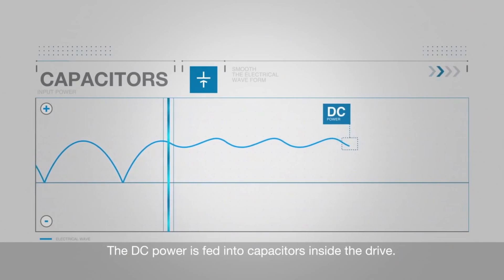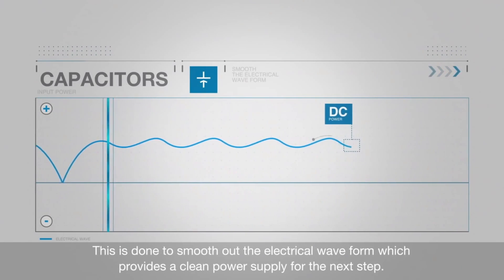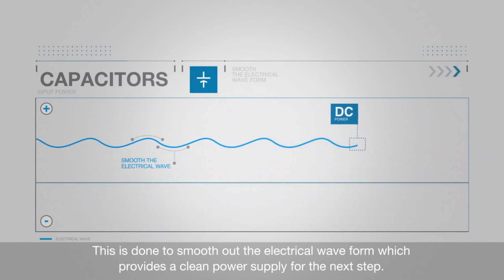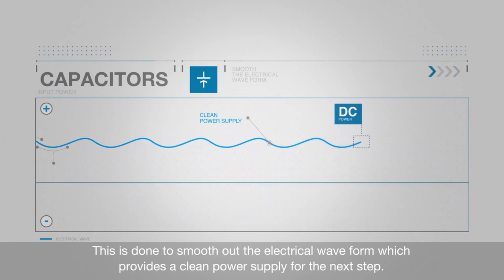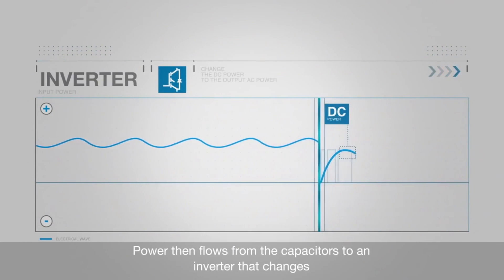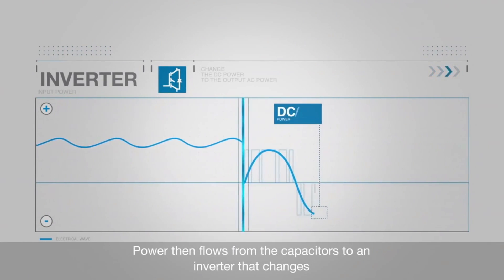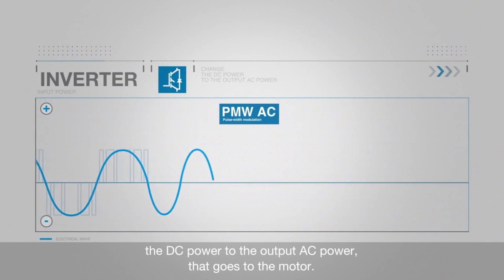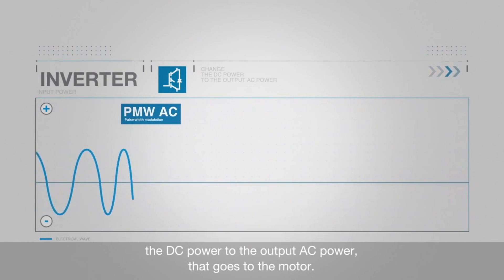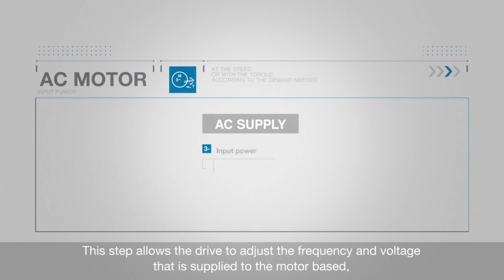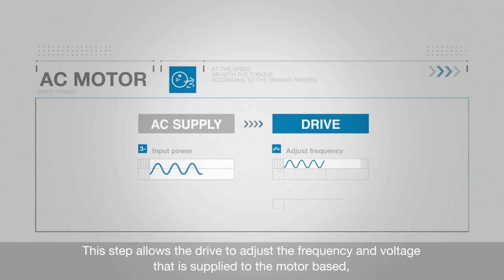The DC power is fed into capacitors inside the drive. This is done to smooth out the electrical waveform, which provides a clean power supply for the next step. Power then flows from the capacitors to an inverter that changes the DC power to the output AC power that goes to the motor.